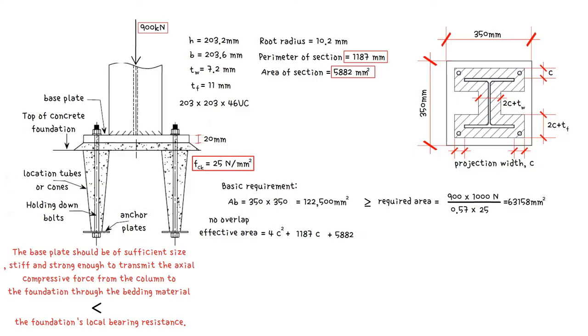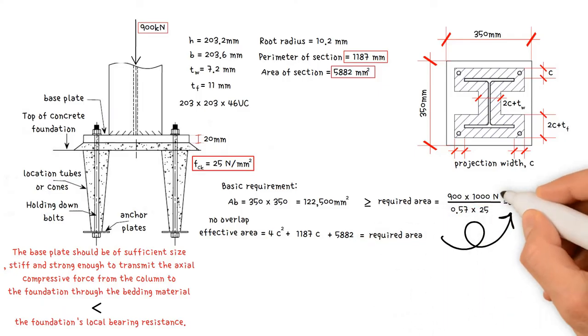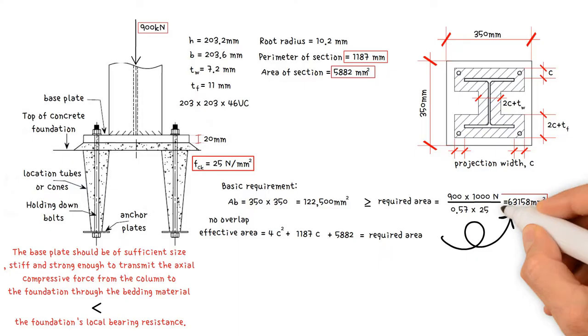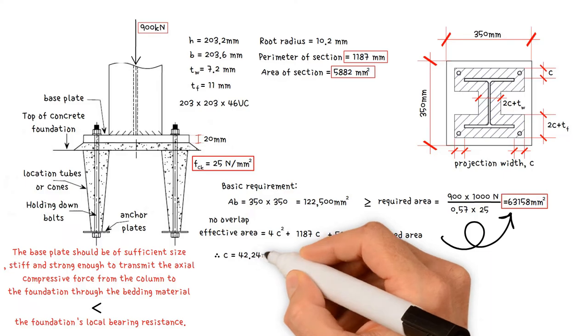We should now be able to solve C by equating effective area with required area 63,158 millimeters squared. Therefore, C equals 42.24 millimeters.